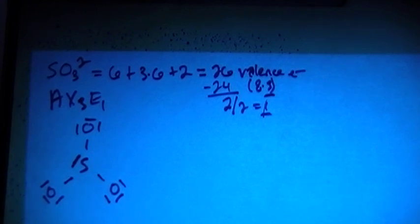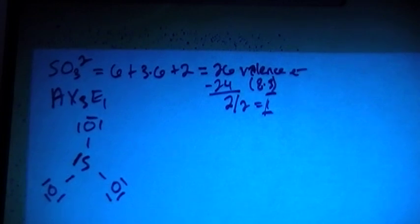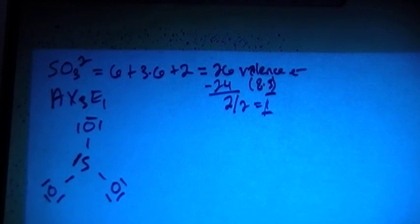So at first this might seem right, and if you want, you can calculate the formal charges. Because once you do that, you'll realize that this adds up, but it's not really the best setup for this compound. Because the sulfur is going to give you a plus 1 charge, and that's just not something that you want on sulfur.